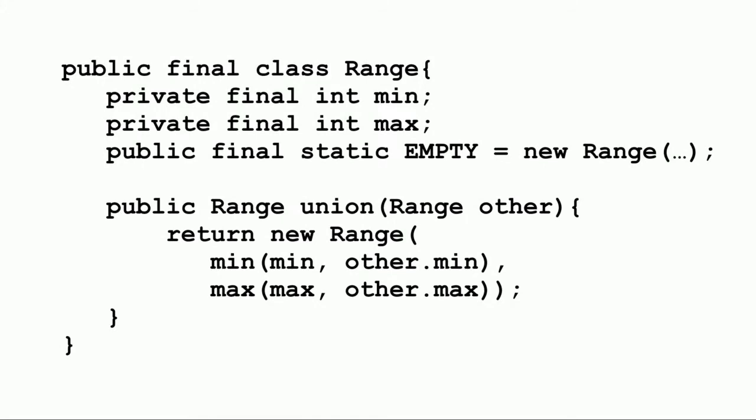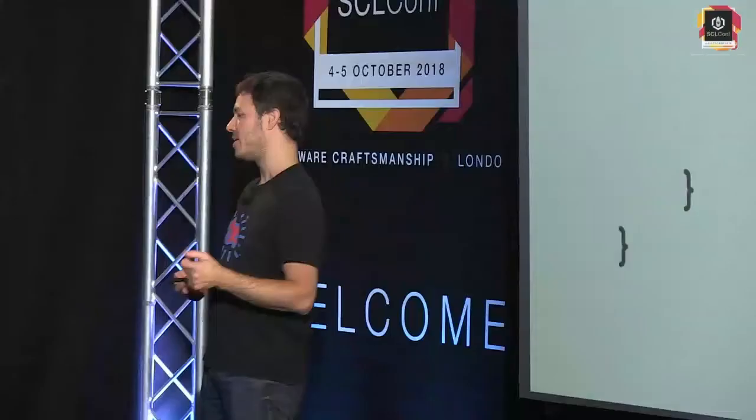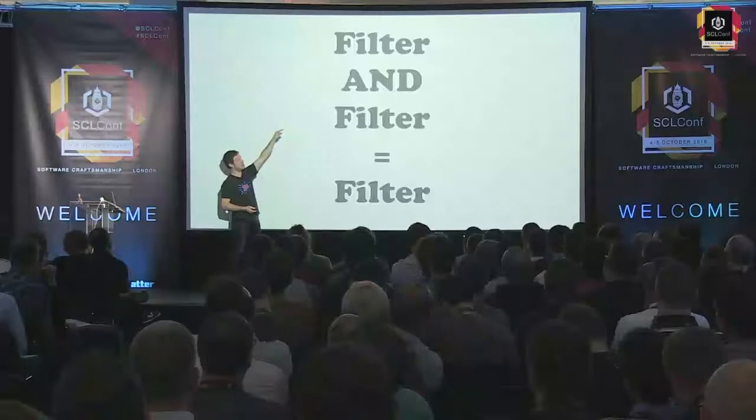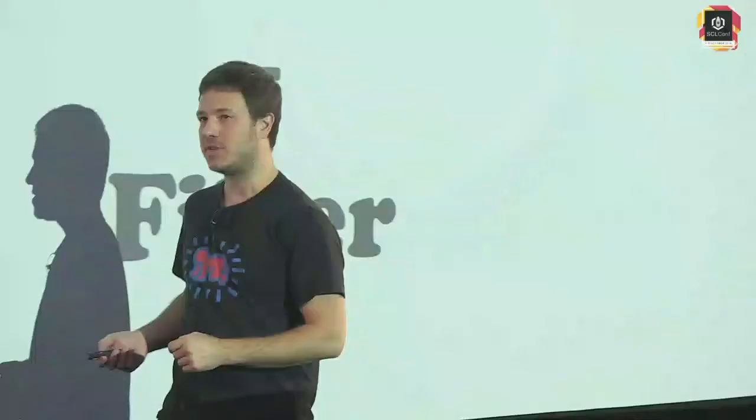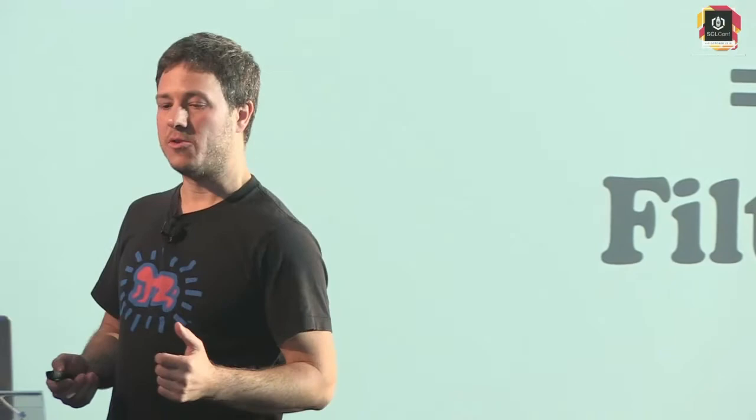The implementation here would be: take the min of the mins, the max of the maxes, and you're done — very simple code. Predicates are monoids too: predicate AND predicate is still a predicate, with the neutral element being the predicate returning always true. The same applies for OR, with the neutral element being the predicate returning always false.